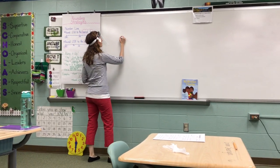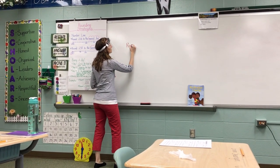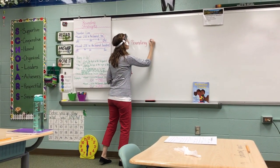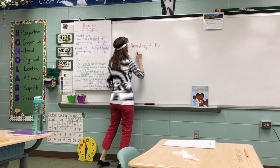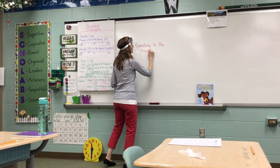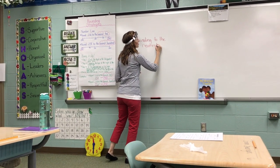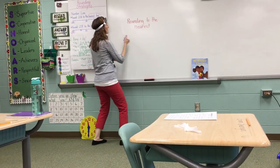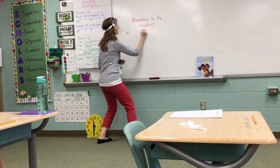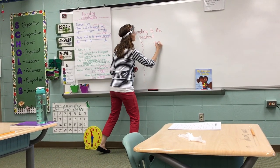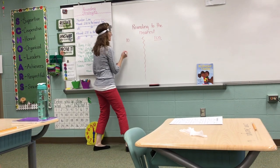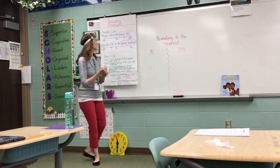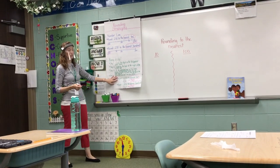Okay, so today we're going to review very quickly — rounding to the nearest. We've done both tens and hundreds, so we're going to be practicing both now. Rounding to the nearest ten on this side, and rounding to the nearest hundred on this column. Scholars, we know we have to use our strategy, so I've got our anchor chart up here to remind ourselves.